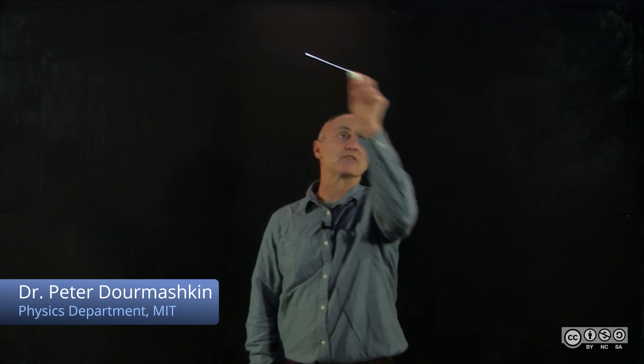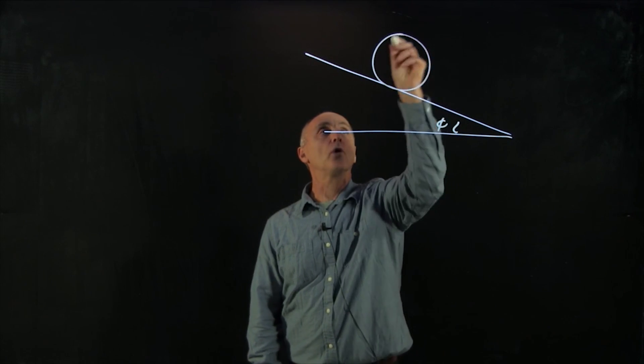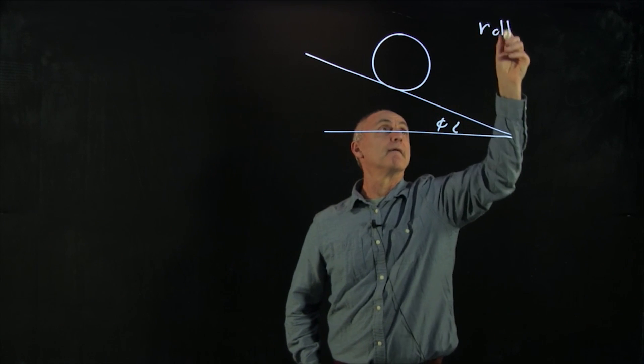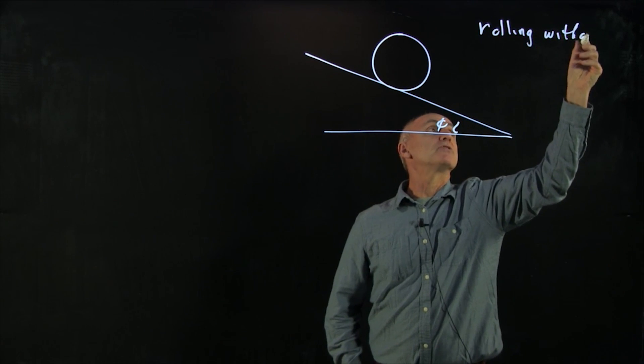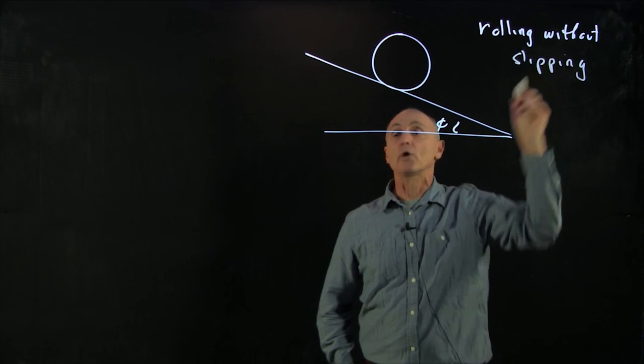Now let's go back and analyze that same problem that we were looking at before of a wheel rolling down an incline plane, and it's rolling without slipping. But instead of using the energy method, we're now going to use the torque method.